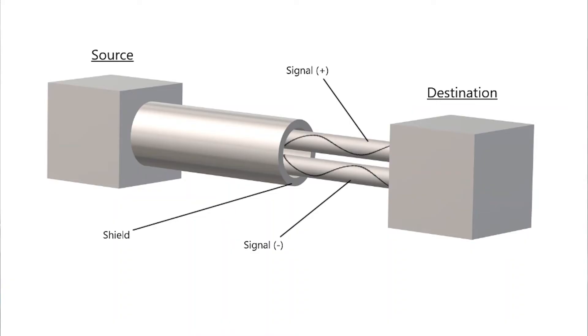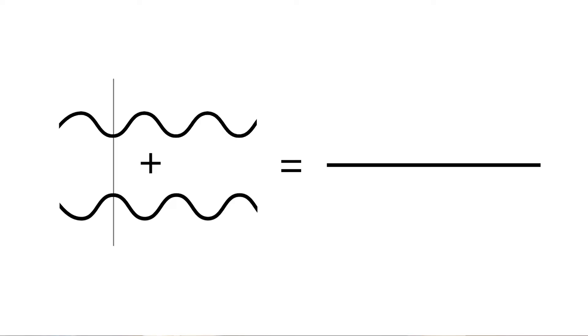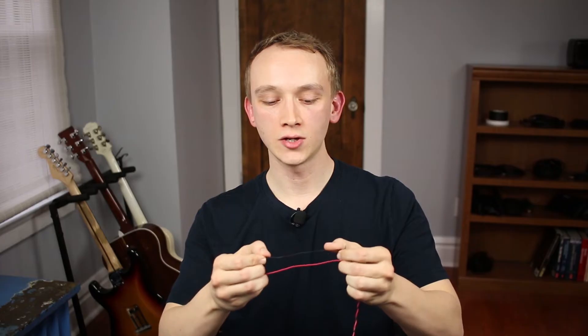How does twisting the wires of a circuit help protect the signal on that circuit from noise? Remember that any circuit is made up of two wires each with opposite energy. So if there's a positive voltage on the black wire there will be a negative voltage on the red wire and vice versa. The polarity of the electrical current through each wire is opposite, and the polarity of the magnetic field around each wire is also opposite. When opposite forces are added together they completely cancel out.